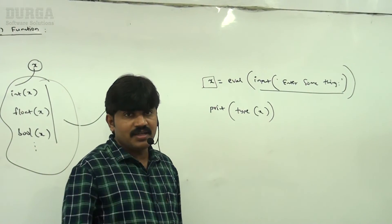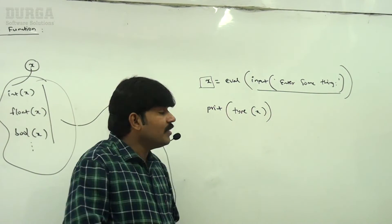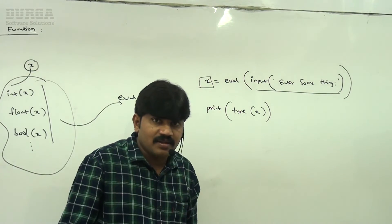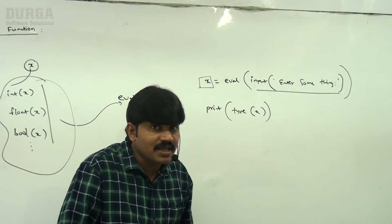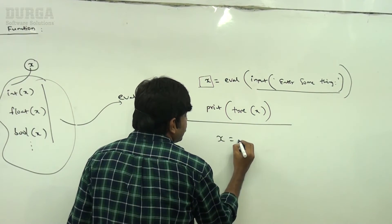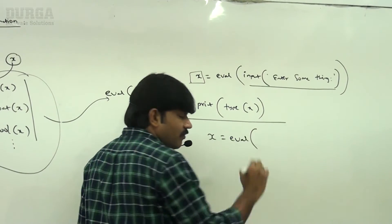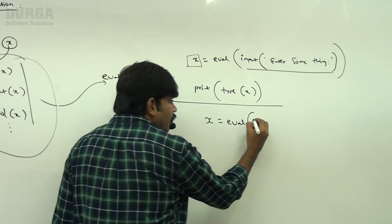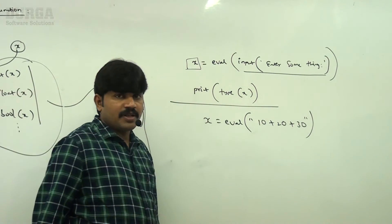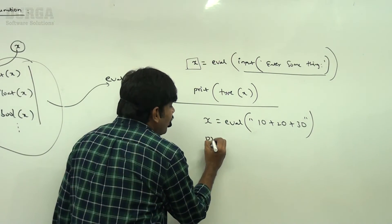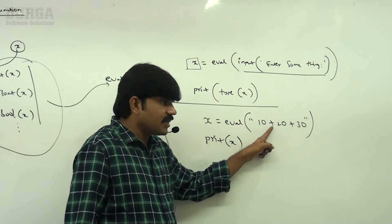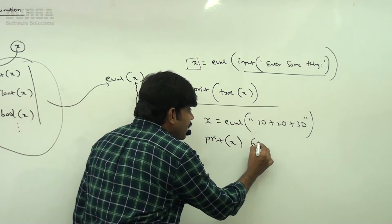There is one more specialty of eval(). If you provide an expression, it will evaluate that expression and return the result — that is the biggest specialty. Observe: if I take x = eval('10 + 20 + 30'), then print(x) — the value is 60. Directly you are going to get 60.